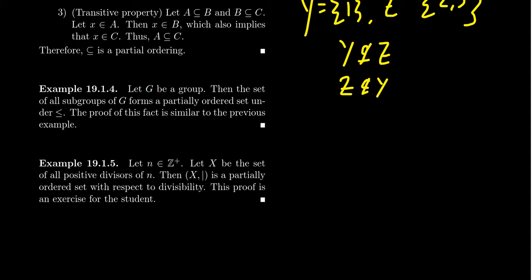As a last example, sort of another canonical example: if you have a set of positive integers, and you take the relationship of divisibility, where X is going to be the positive divisors of some positive integer N, then with respect to the divisibility symbol, this also forms a partially ordered set. I'm going to leave it up to an exercise to the viewer to prove that one. These give some important examples of partially ordered sets.